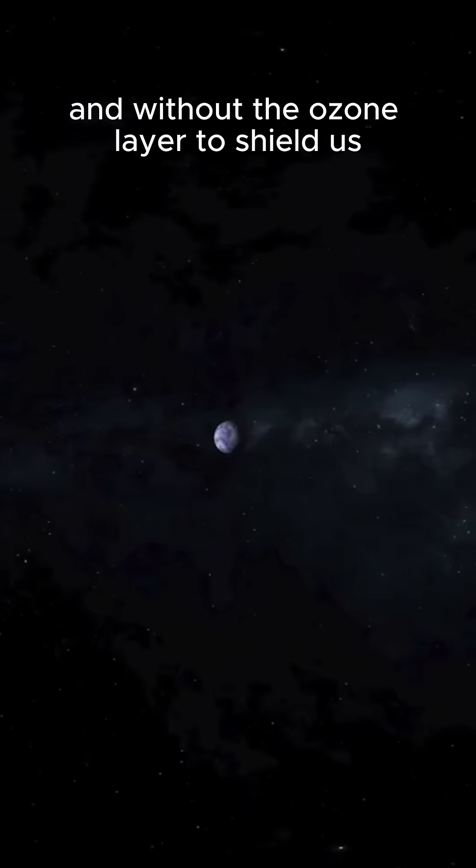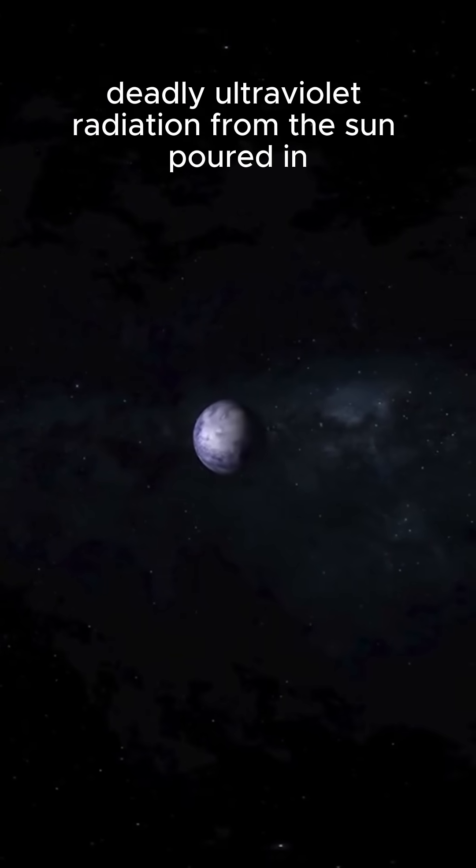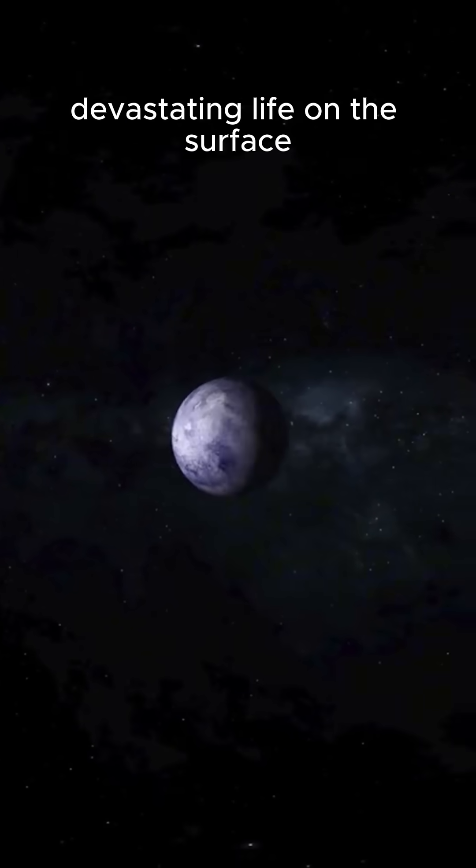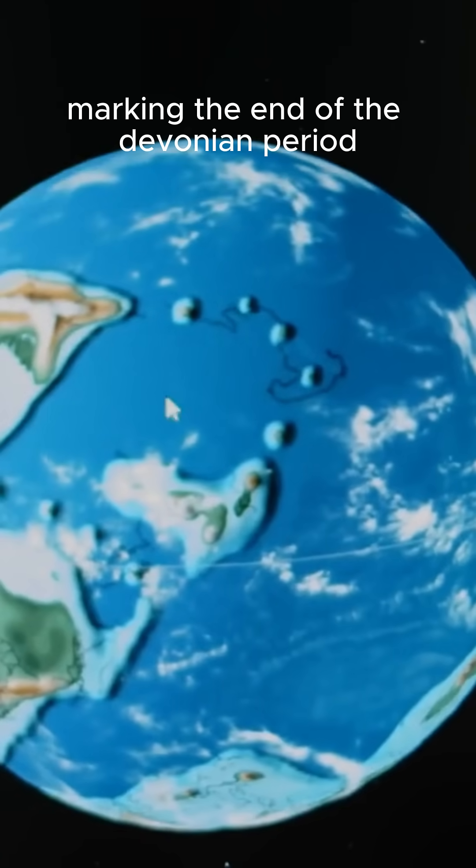Without the ozone layer to shield us, deadly ultraviolet radiation from the sun poured in, devastating life on the surface. Around 75% of all species disappeared, marking the end of the Devonian period.